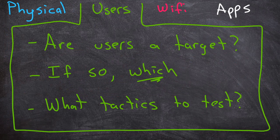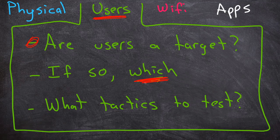Next, the users. We've talked about whether you're legally allowed to test users, but again, should you test them? Are they one of the things the customer wants you to target? If so, which users are targets? Maybe you're not allowed to pen test the administrative staff because they're too busy and don't have much technical access. Maybe they only hired you to test the marketing team. Make sure that users, if they are part of the target, are written in your scope.